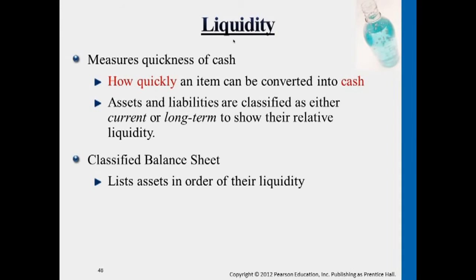Assets and liabilities in financial statements will typically have separate categories: a current asset, a long-term asset, a current liability, and a long-term liability.